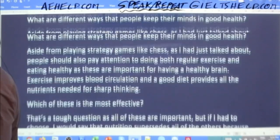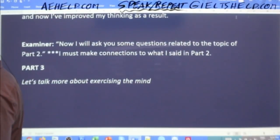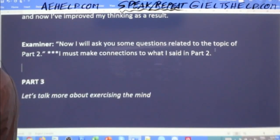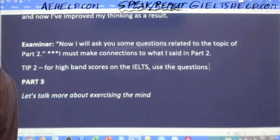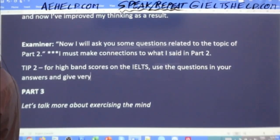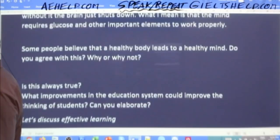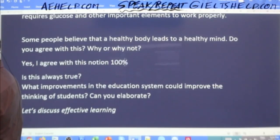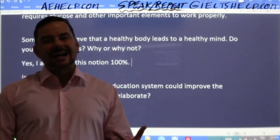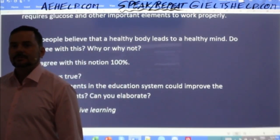Tip number two for high band scores on the IELTS: use the question in your answers and give very direct answers. Your answers for an agree/disagree question should start with 'Yes, I agree with this notion 100%' — start with that kind of expression right away so the examiner doesn't have to wait and figure out whether you agree or disagree.